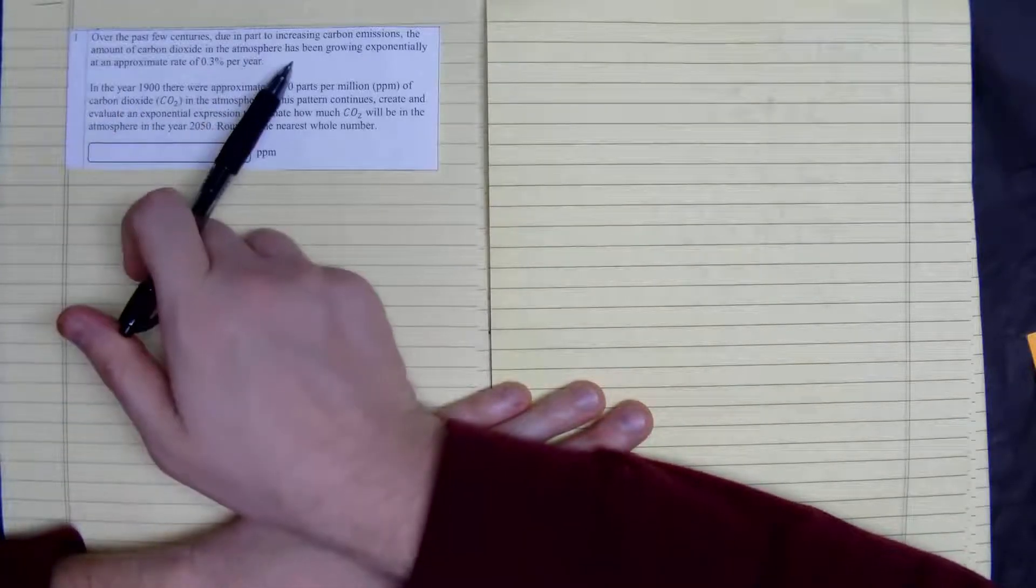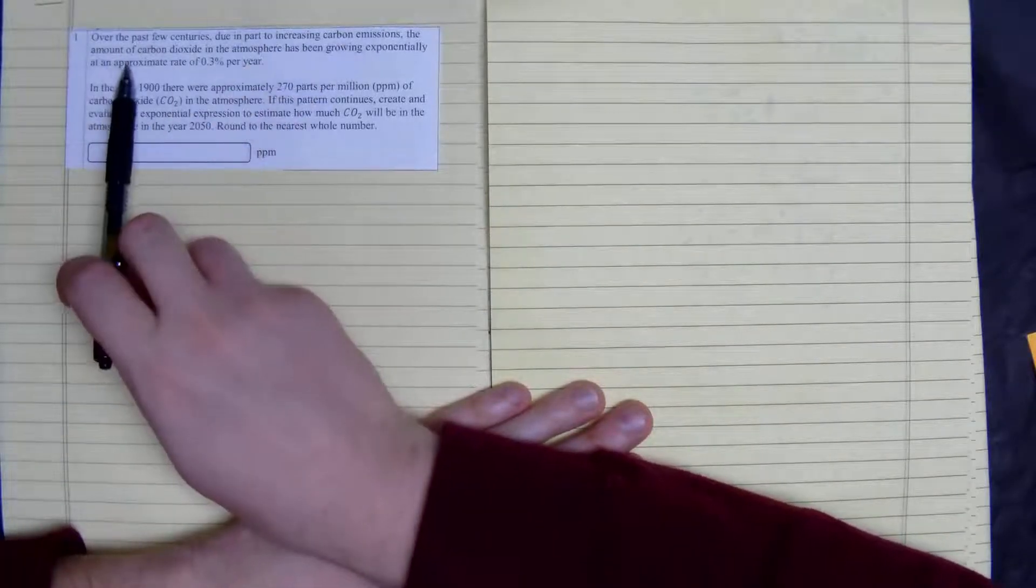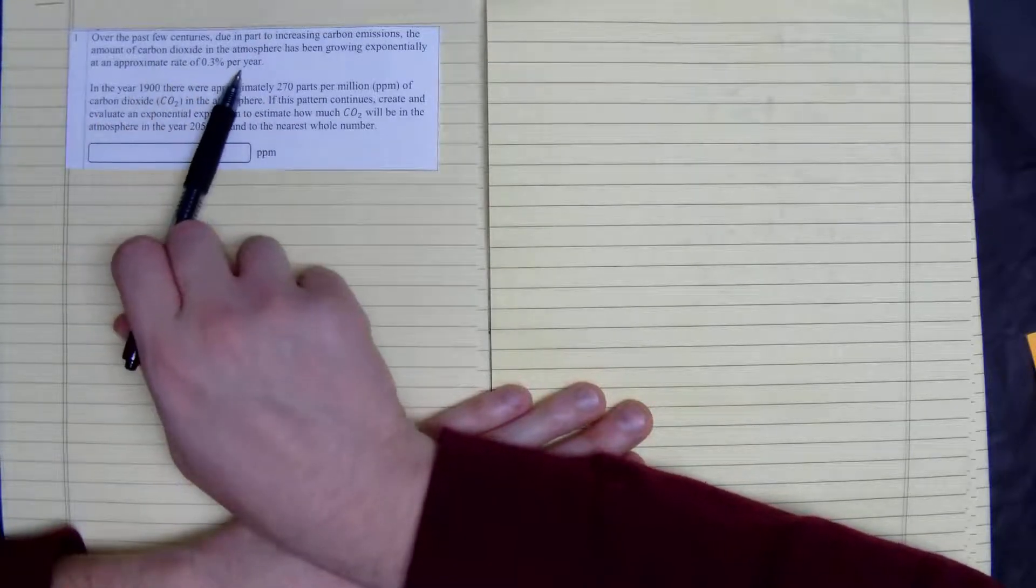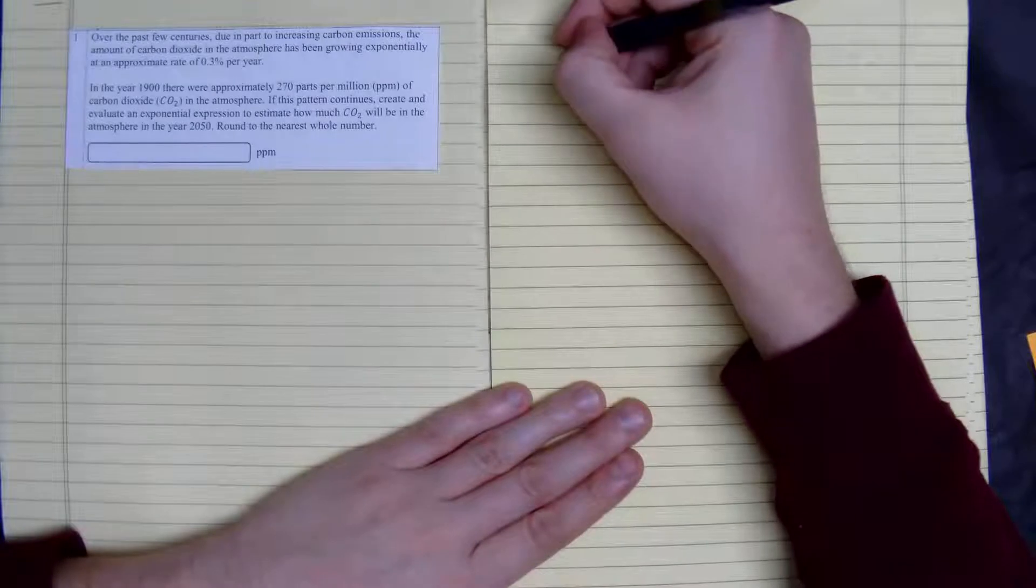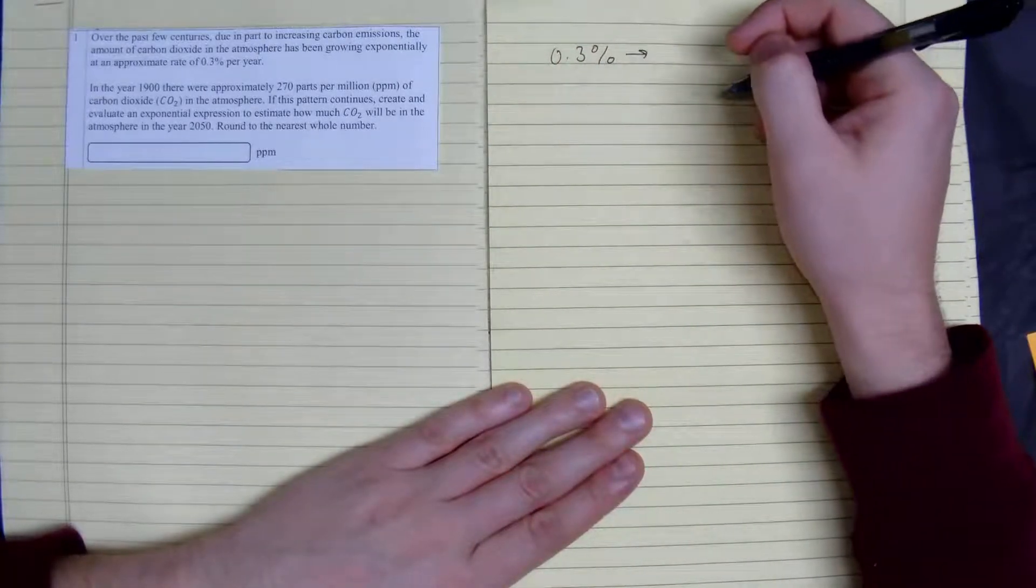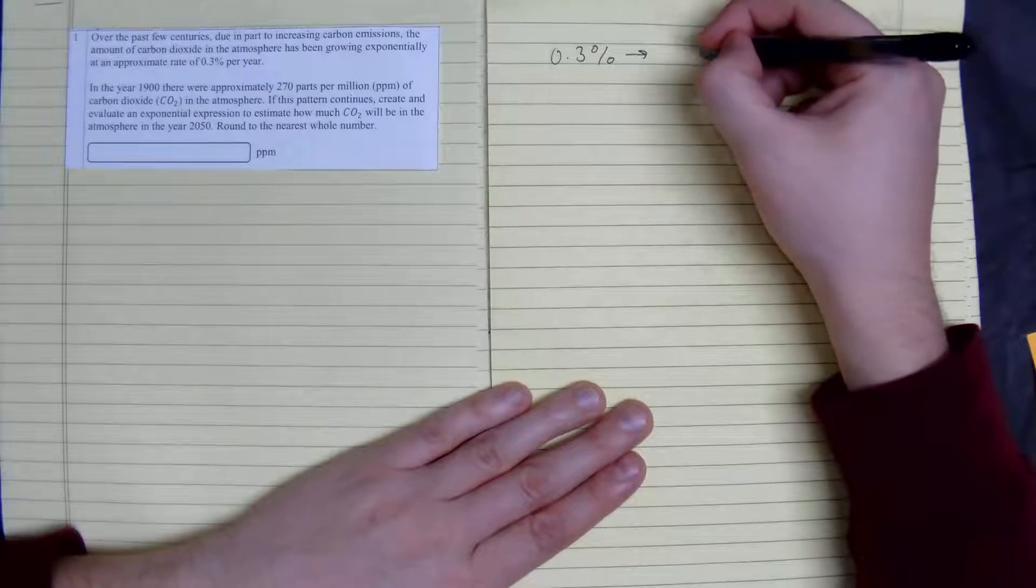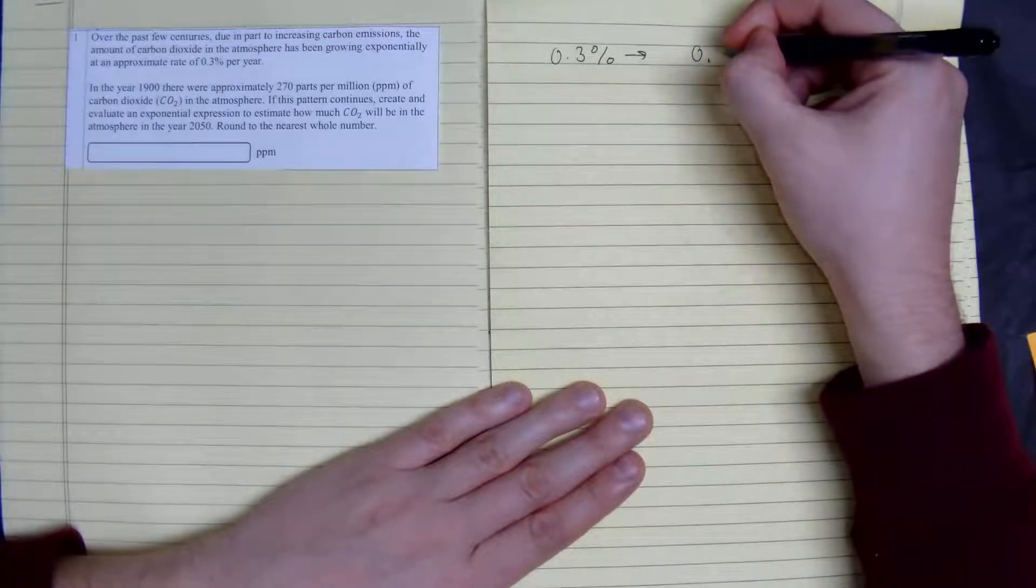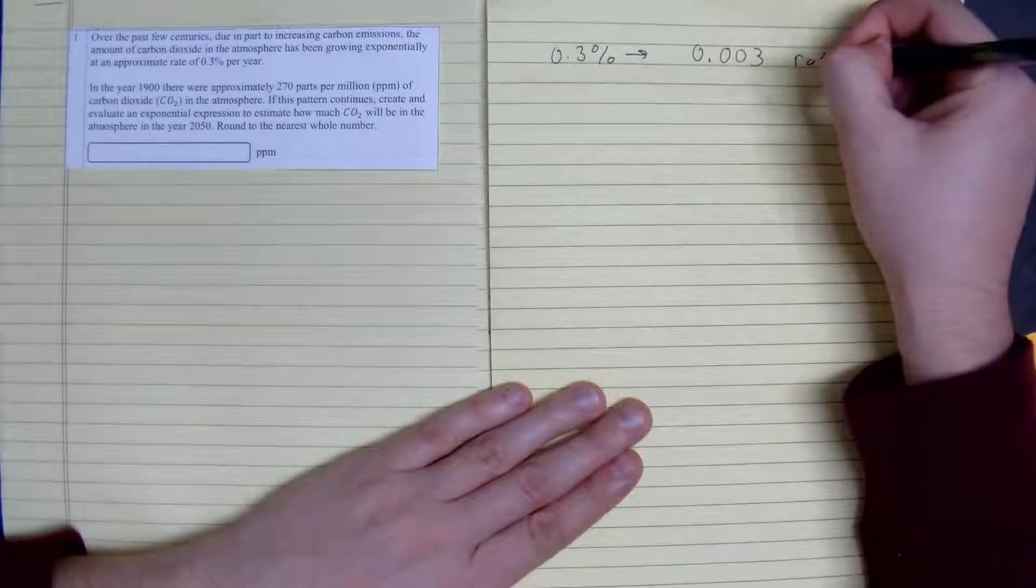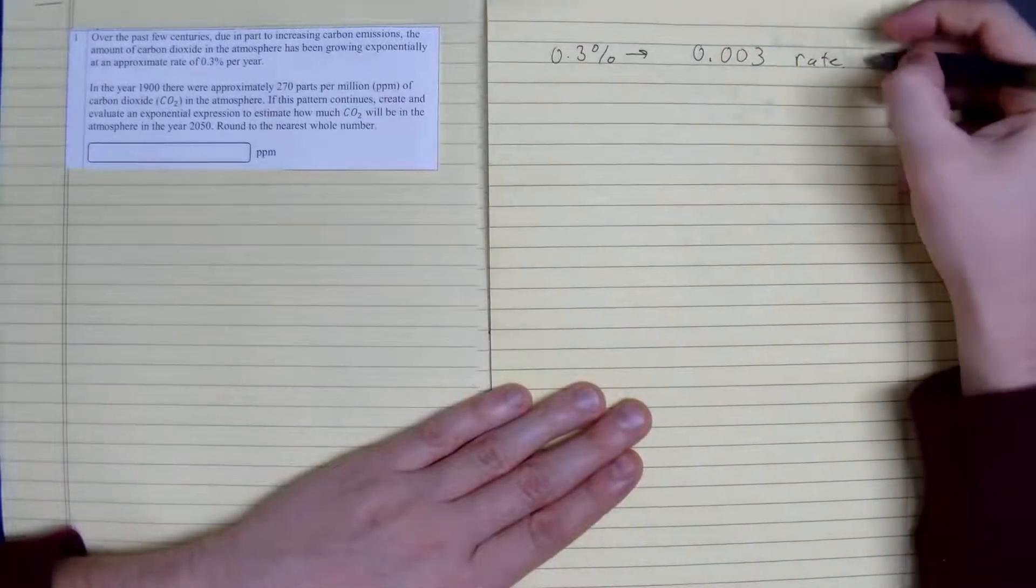Over the past centuries, due in part to the increase in carbon emissions, the amount of carbon dioxide in the atmosphere has been growing exponentially at an approximately rate of 0.03%. Convert that to a decimal, which would be 0.003. This is our rate per year.